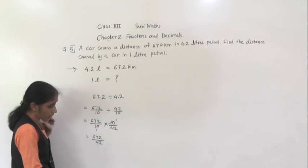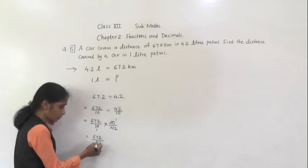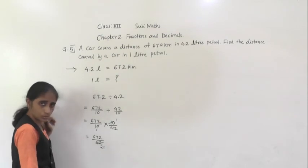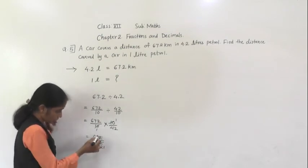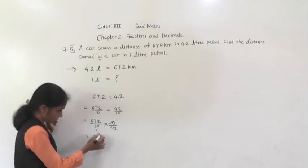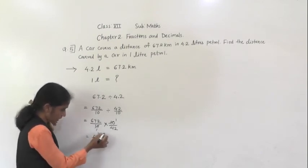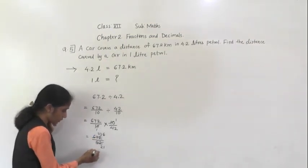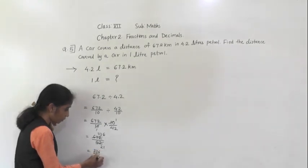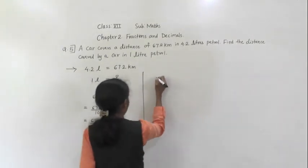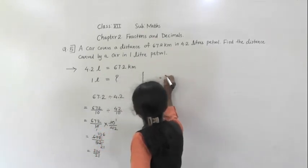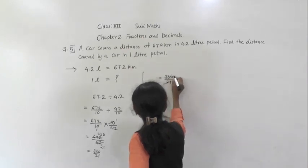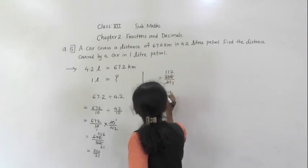Check — both numbers are divisible by 2. We will start from the smallest number. 2 twos are 4, 2 ones are 2. 2 threes are 6, 2 threes are 6, 2 sixes are 12. Again these both numbers — what we got? 336 upon 21. These numbers are divisible by 3. 336 upon 21: 3 sevens are 21, 3 ones are 3, 3 ones are 3, 3 twos are 6. So 112 upon 7.